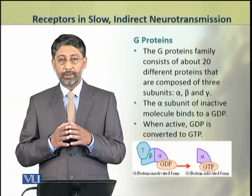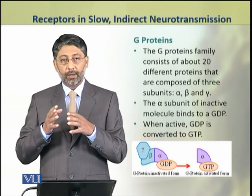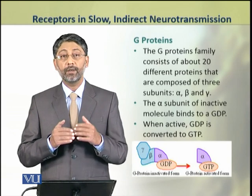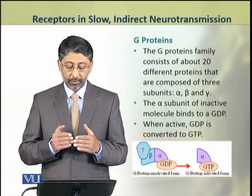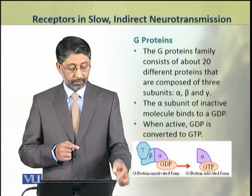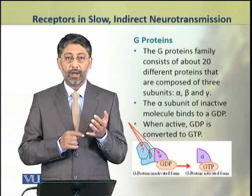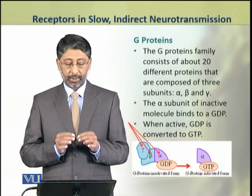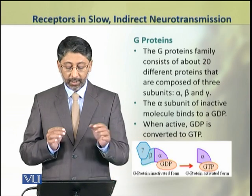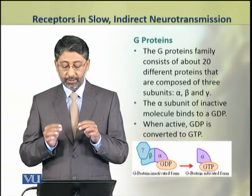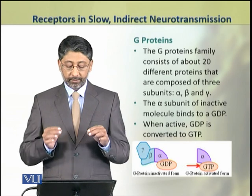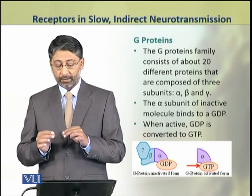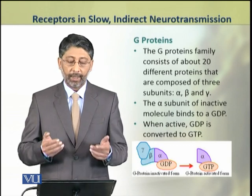G proteins are a large family consisting of about 20 different types, composed of three subunits: alpha, beta, and gamma. The alpha subunit of the inactive molecule binds to GDP. When this GDP is converted into GTP, the protein becomes active.